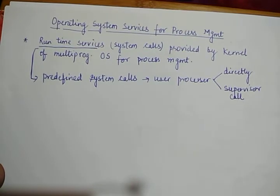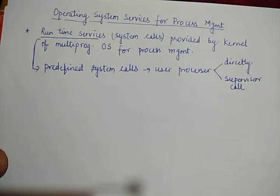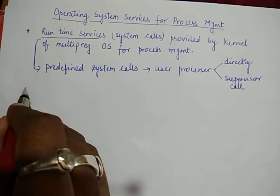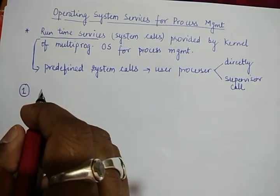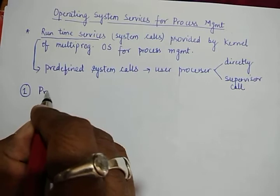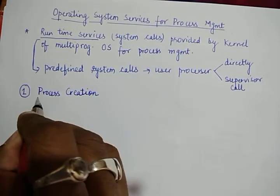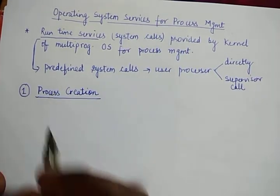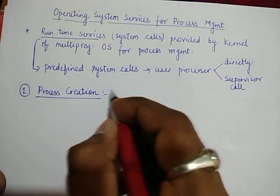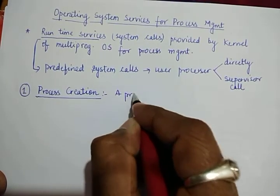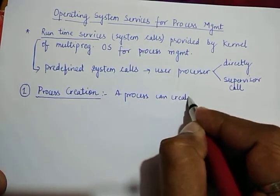There are various runtime services or system calls which are used by the operating system for process management, and we are going to discuss them one by one in our upcoming lectures. Today we are going to discuss the first service, which is called process creation. As we know, in an operating system a process can create new processes.